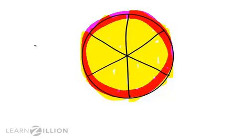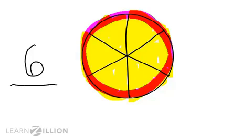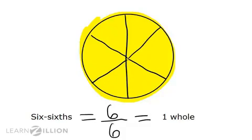Six sixths looks like this. Six is the numerator because that's the number I'm thinking about — all of the parts. And six is also the denominator because that's the total number of parts that make up this whole. When the numerator and the denominator are the same, this fraction equals or is the same as one whole. That is because the part that we are thinking about, the numerator, is all of the parts. We are thinking about six out of a total of six equal parts in this circle. Six sixths is equal to one whole.